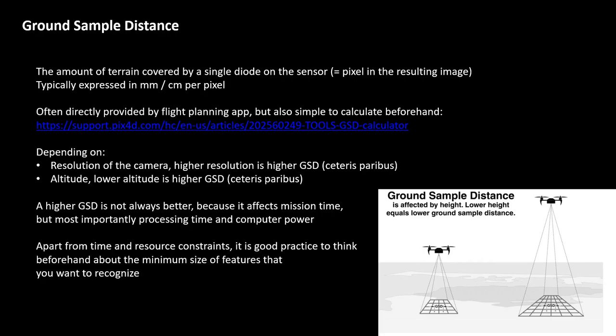GSD is often directly provided by the flight planning app, but you can also calculate it beforehand, which is convenient if you want to plan a mission without starting up the drone. You can also do this manually — for example, the Pix4D site that I've linked to here has very useful GSD calculators for your specific sensor. The GSD depends on camera resolution — higher resolution gives a higher ground sample distance if all other conditions are similar — and on altitude: a lower altitude will also result in a higher ground sample distance.